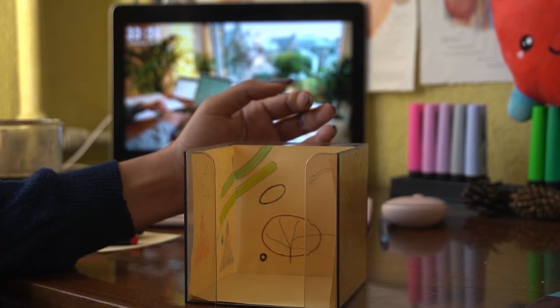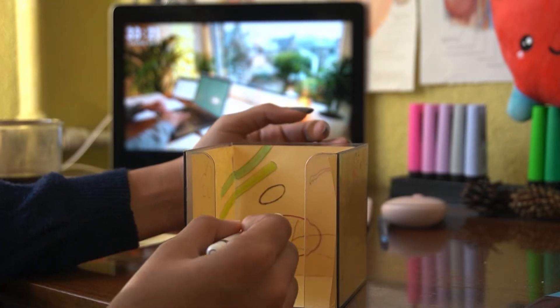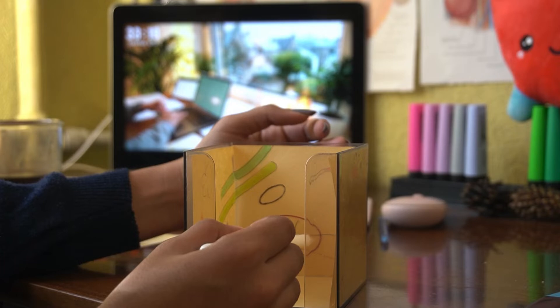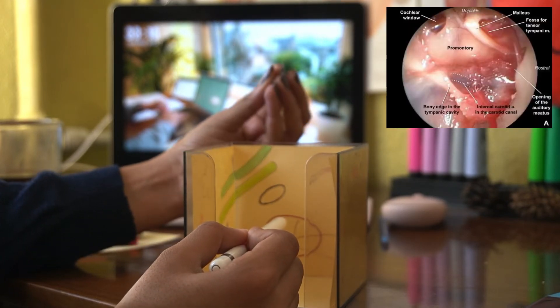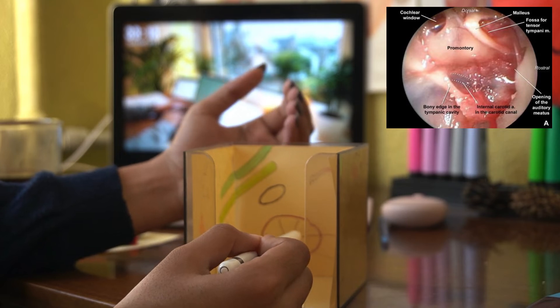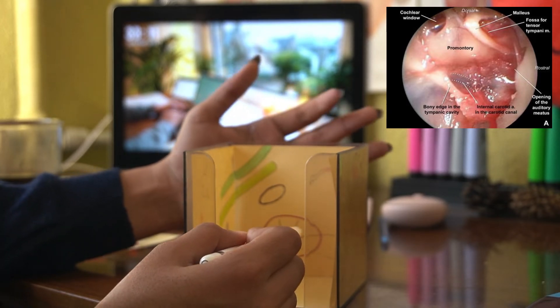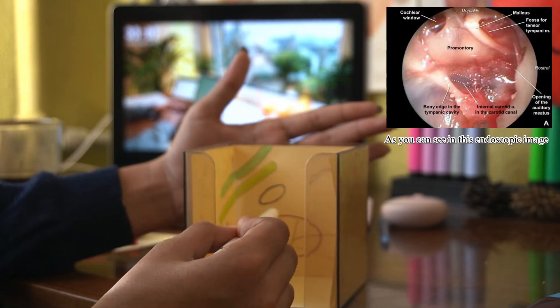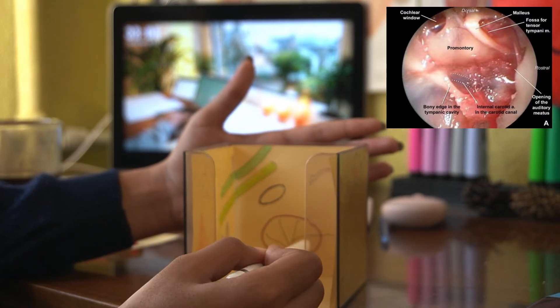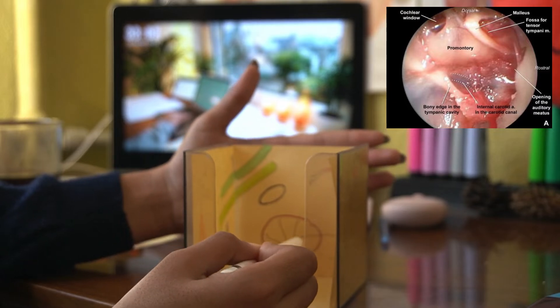So basically it originates from here, wraps around the processus cochleariformis, and attaches to the handle of malleus. It presents a bulge called the promontory, which is due to the basal coil of the cochlea. This has a major bulge-like projection. Since it's a 2D illustration, you cannot make out, but yes, there is a bulge over here and therefore it is named as promontory.